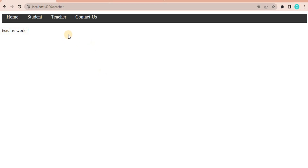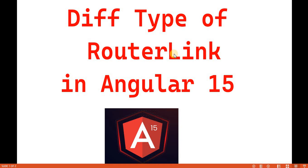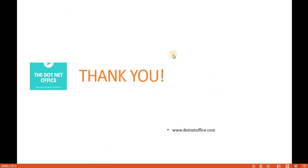But now there is a problem — when I click on any tab, it is not highlighting which tab I've clicked. The active link is not set; that is basically called router link active, and we will talk about that in the next video. So that's it for this video. If you have any questions or doubts, please comment. Thank you.